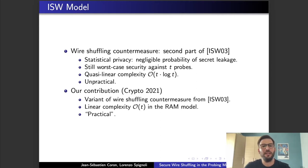As we will see, the transformer will work in two steps, but at the second of it, at the end of the second, they will still achieve worst case security with quasi-linear complexity. But still, such construction is considered impractical.